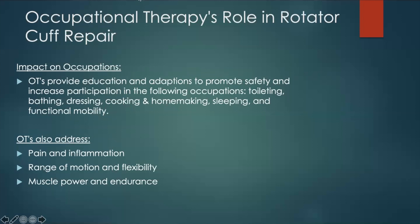Common activities of daily living and instrumental activities of daily living that are most often impacted may include dressing, sleeping, homemaking or cooking, toileting, showering, and functional mobility if a cane was used prior to surgery. These activities are often impacted as they require the arm to be in positions that are not yet attainable or permitted per post-surgical protocol. One thing occupational therapists can do is provide adaptive devices and education to enhance participation in occupations.